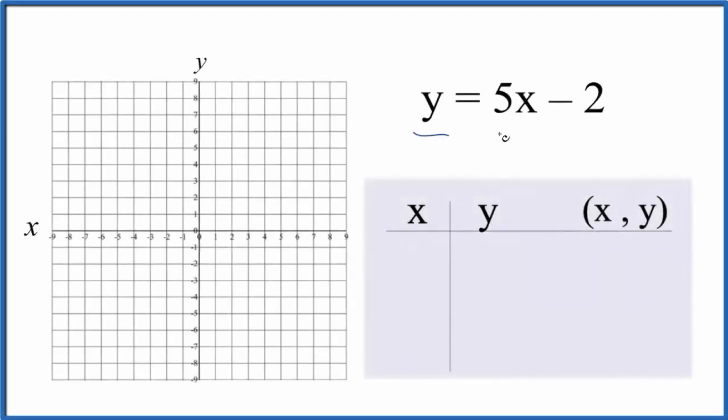Let's graph the linear equation y equals 5x minus 2, and we're going to do this two ways. We'll use a table of values here, then we'll check our work with slope-intercept formula.